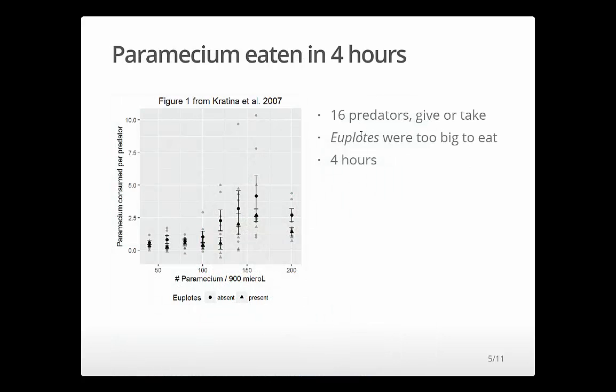Okay, so here's the data. This is Pavel Kratina and his work published in 2007 in the journal Ecology. And this is more or less Figure 1 from their paper. I've added the raw data behind it that Pavel was kind enough to share with me. So basically the experiment consists of different densities of Paramecium in 900 microliter wells. So you've got anywhere from 40 up to 200 Paramecium in these little containers.